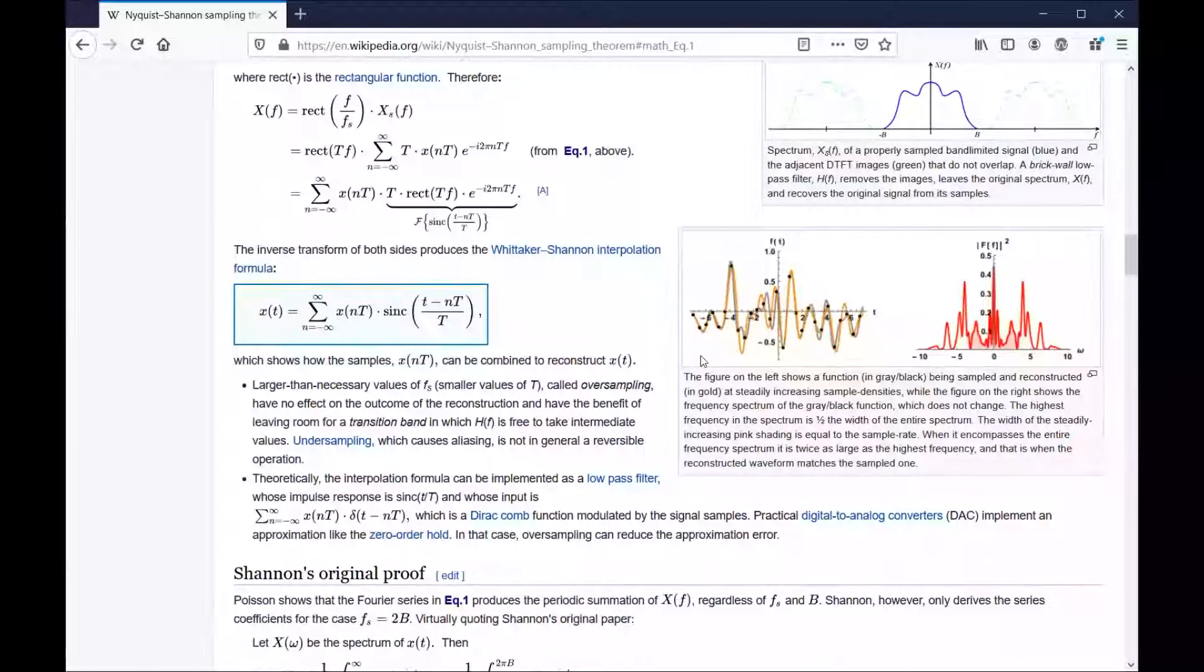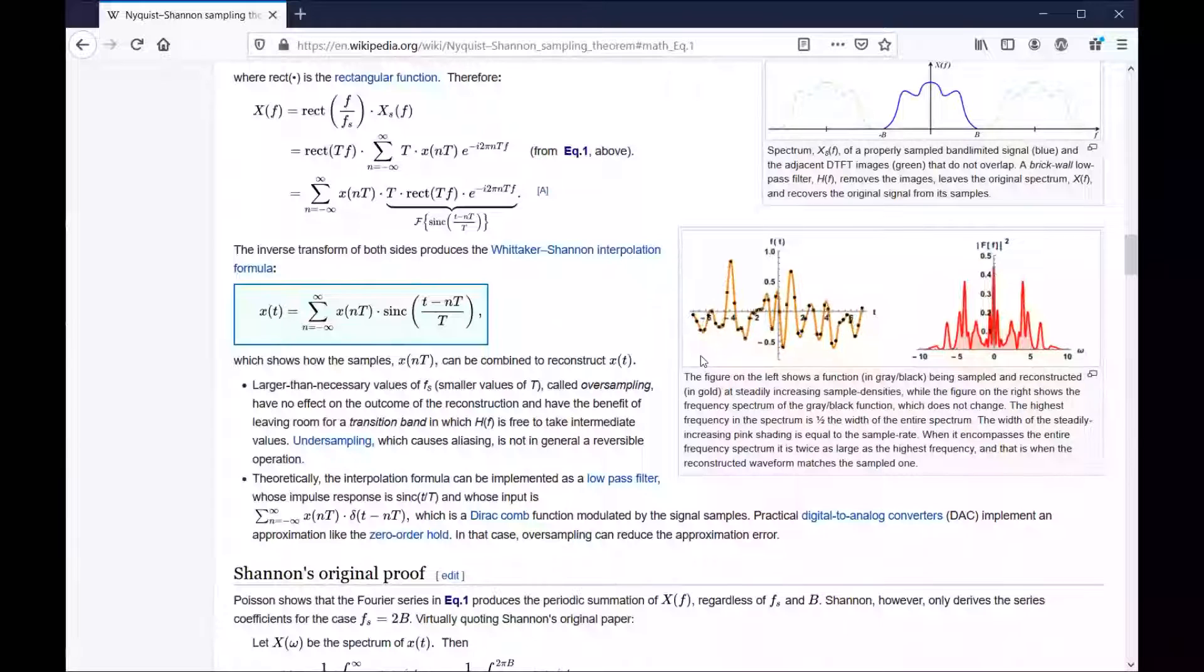B. Shannon however only derives the series coefficients for the case f sub s equals 2B. Virtually quoting Shannon's original paper: let x of omega be the spectrum of x of t. Then x of t equals one over two pi the integral from negative infinity to infinity of x of omega e raised to the i omega t power d omega equals one over two pi the integral from negative two pi B to two pi B. And I immediately recognize that as a Fourier transform from taking Math 309 at the University of Washington. But you could do a similar thing with this equation, you could explore it hierarchically, you could zoom in and out and you could process it one little chunk at a time which is very very helpful when digesting these proofs that have a lot of complicated symbols but it's not actually that complicated once you understand that there's just a lot of Fourier transforms going on.